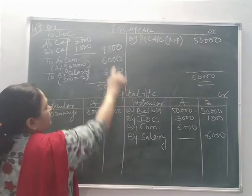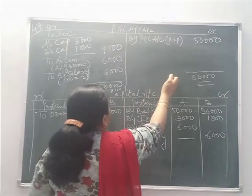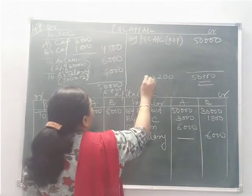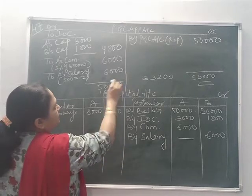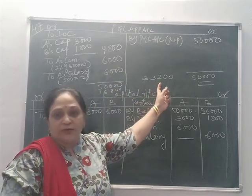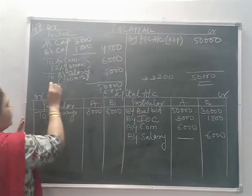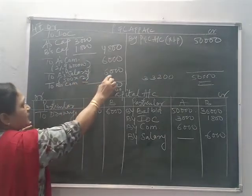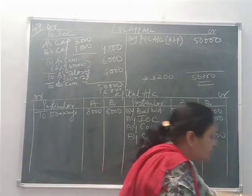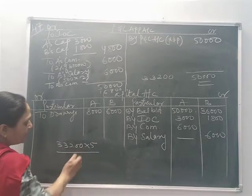Calculating the divisible profit: Starting from 50,000, subtract the expenses already provided — interest on capital 4,800, A's commission 6,000, and B's salary 6,000 — totalling 16,800. So 50,000 minus 16,800 = 33,200. On 33,200 we now calculate B's commission at 5/105. This calculation is done separately as rough work, and then B's commission will be written first before the remaining profit is distributed in 3:1.